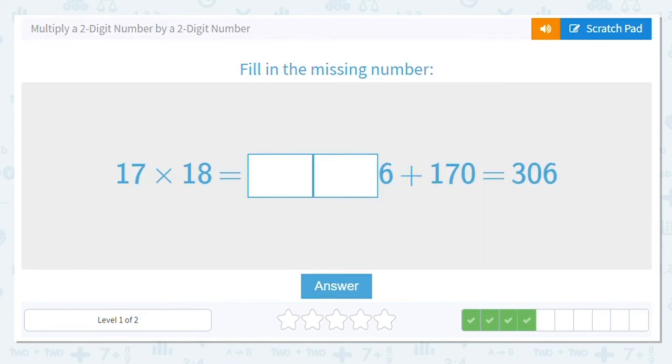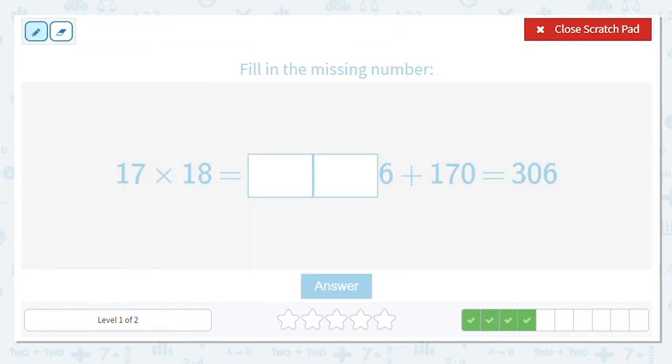Next one, 17 times 18. We need to find out the two missing digits here in our first partial product. So we have 17 times 18. We're not worried about that tens place. So we do 8 times 7, which is 56, and we have a 6 here, carry the 5.